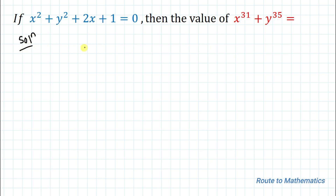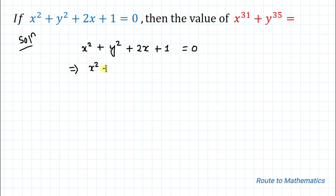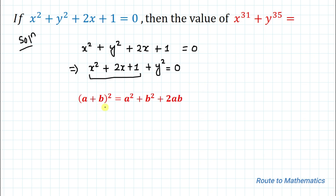We have one equation: x² + y² + 2x + 1 = 0. From this equation we need to find the values of x and y. In the next step we rearrange it as x² + 2x + 1 + y² = 0. By looking at this term, I'll apply the algebraic identity: (a + b)² = a² + b² + 2ab.